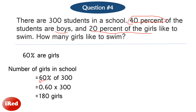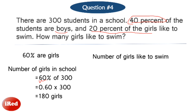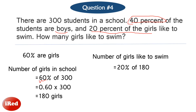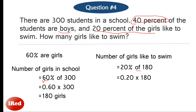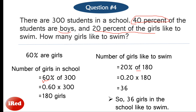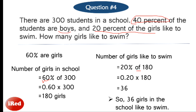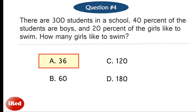Now let's find the number of girls that like to swim. Based on the problem, 20% of the girls like to swim, so we get 20% of 180. Converting 20% to decimal gives 0.20. So 0.20 times 180 equals 36. There are 36 girls in the school that like to swim. The correct answer for number 4 is letter A, 36.